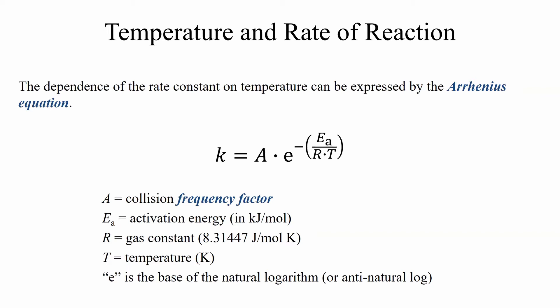Gas constant, as we know, is 8.31447 joules per mole Kelvin. And the reason we're using joules is we're talking about energy. And the temperature, as always, is going to be in Kelvin.